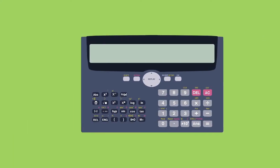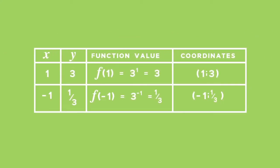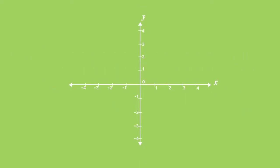You can use your calculator or a table to work out two other points on f of x. For an x value of 1, the function value is 3. For an x value of negative 1, the function value is one third. Use these two points and the y-intercept to sketch the graph of f of x. Plot and join the points with coordinates (−1, 1/3), (0, 1), and (1, 3) to draw the graph of 3 to the power of x. Label this graph f of x.